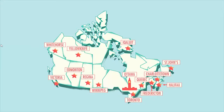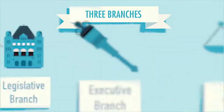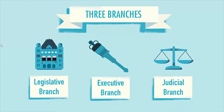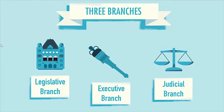In a parliamentary system, government is separated into three branches. There are many layers, with all of them working together to serve the people. Let's take a closer look at how it works at the provincial level in Ontario.